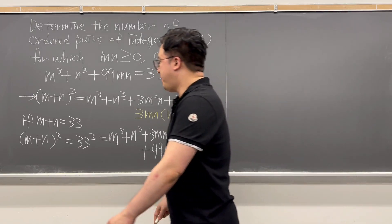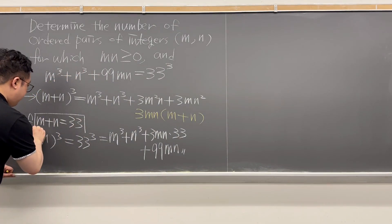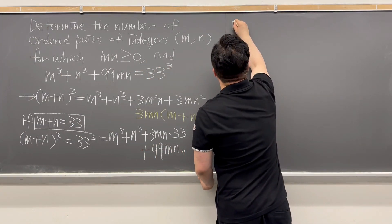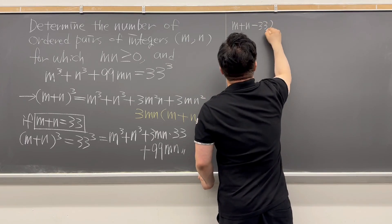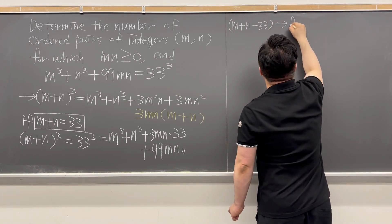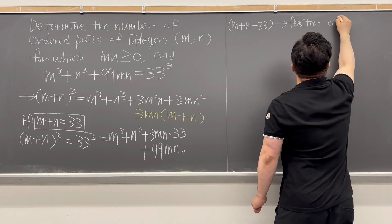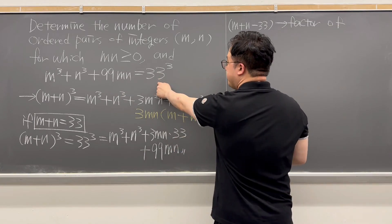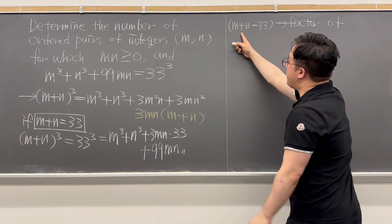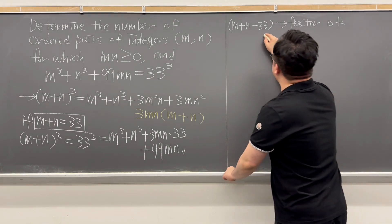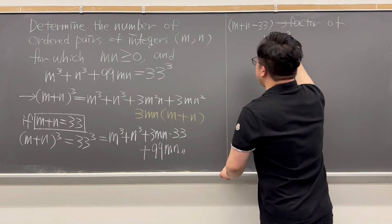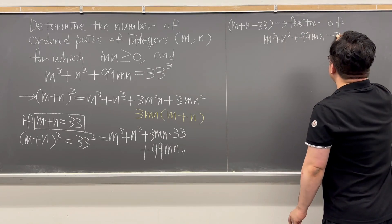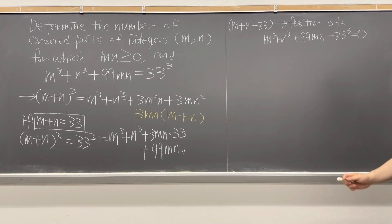Based on this, if m plus n equals 33, then we can say m plus n minus 33 is going to be a factor. Let me move 33 cubed to the left-hand side. So (m plus n minus 33) has to be a factor of m cubed plus n cubed plus 99mn minus 33 cubed equals 0.